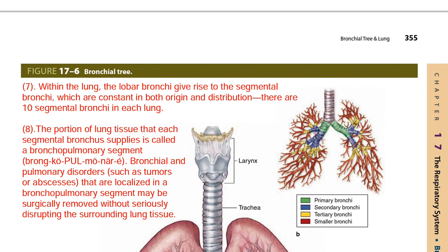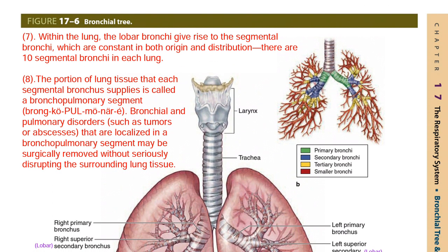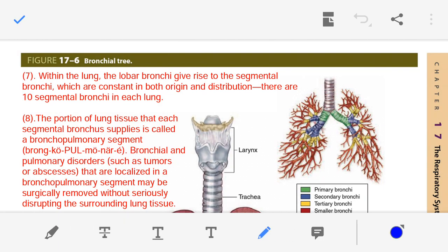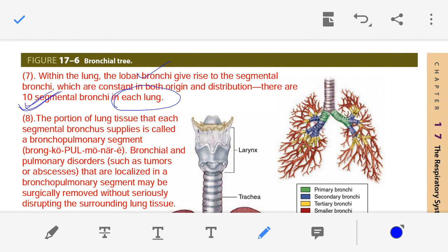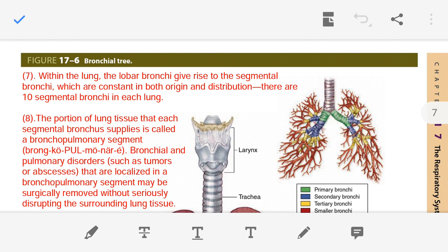The seventh point: once the lobar bronchi enter the lung, they are further subdivided into segmental bronchi, which are constant in both origin and distribution. From the lobar bronchi there arise 10 segmental bronchi, and 10 segmental bronchi are present in each lung - whether left or right.